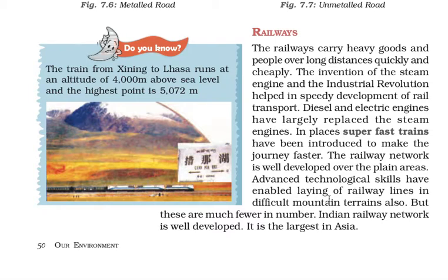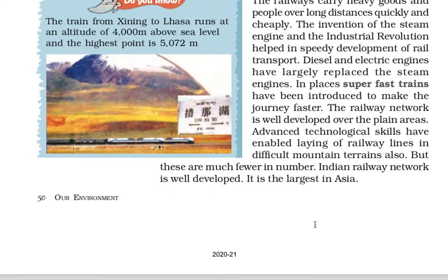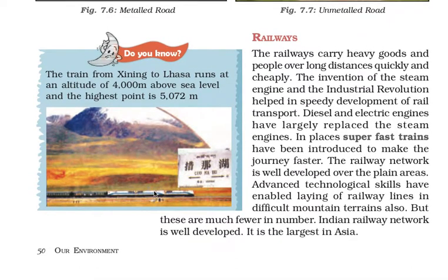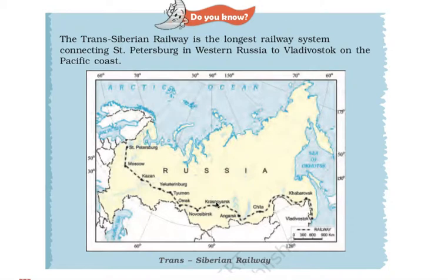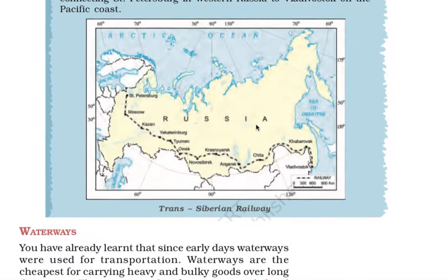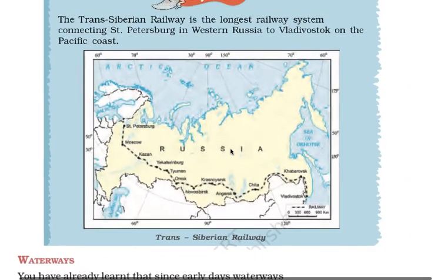Railway lines in mountain terrains are much fewer in number. The Indian railway network is well developed and is the largest in Asia. The Trans-Siberian railway is the longest railway system, connecting Petersburg in western Russia to the east.